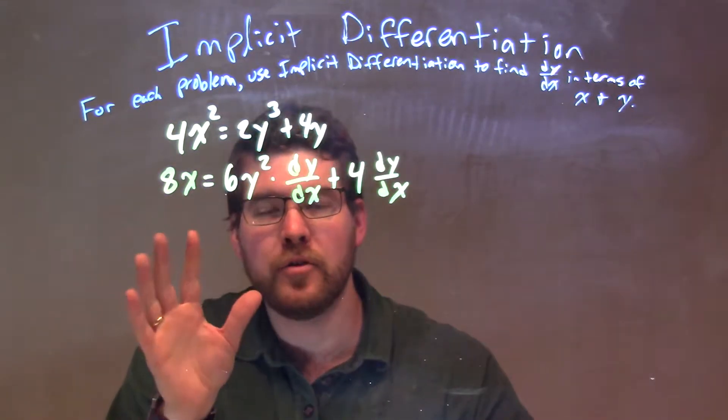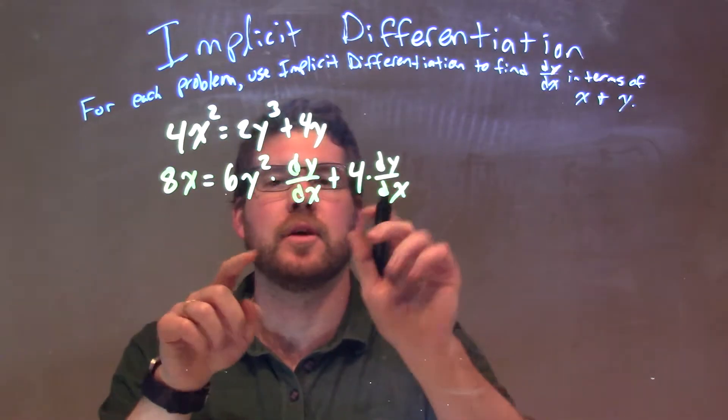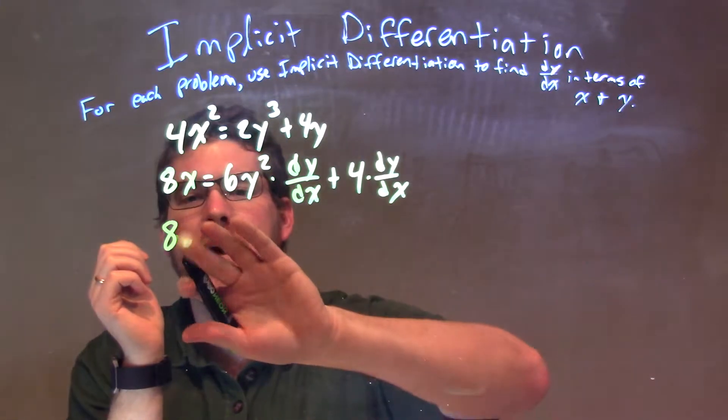Now, what I want to do is I'm going to actually pull out a dy/dx. I see it's being multiplied here in both parts of that plus sign. So, 8x here, 8x,